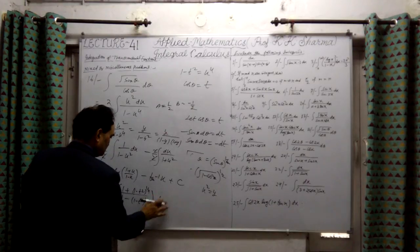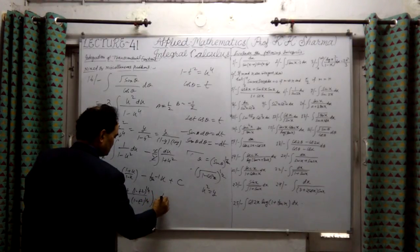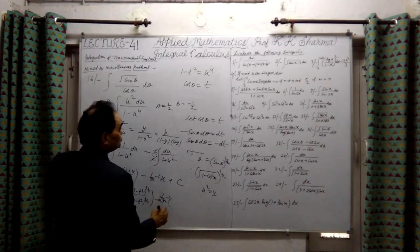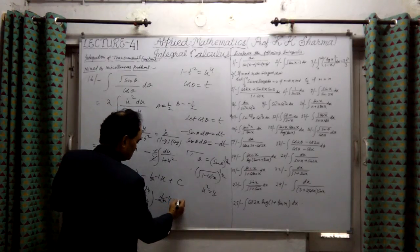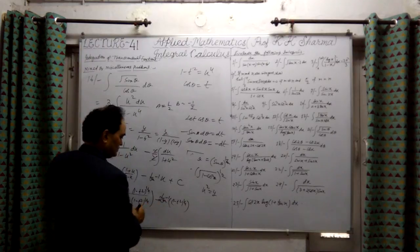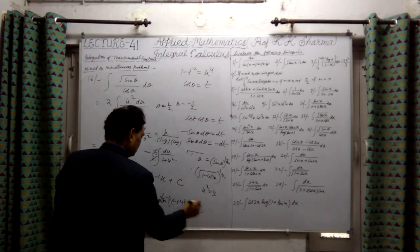Plus minus sign, tan inverse u minus 1 upon 1 minus t squared equal to 1.4, only fourth power of this, plus constant of integration.